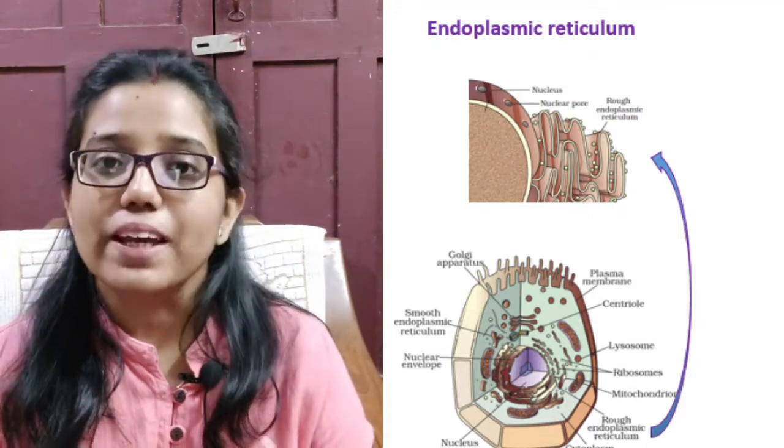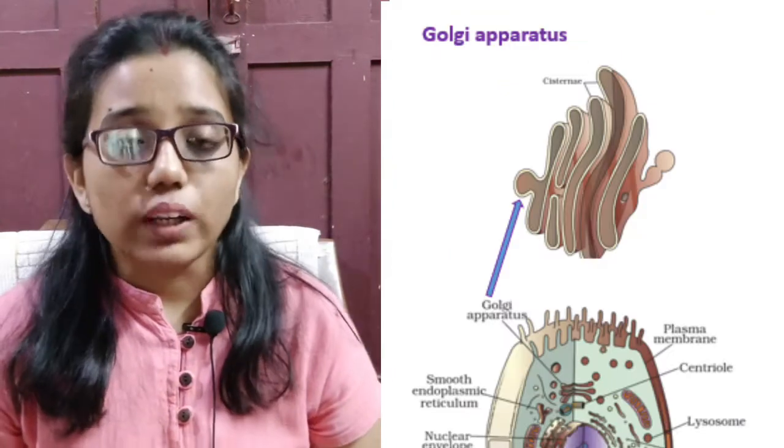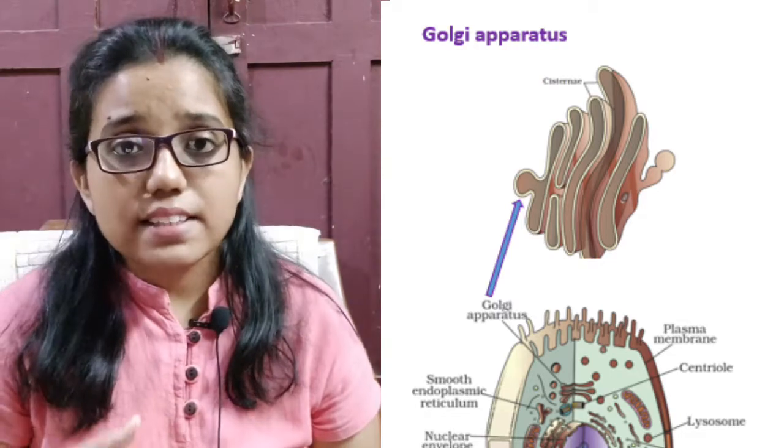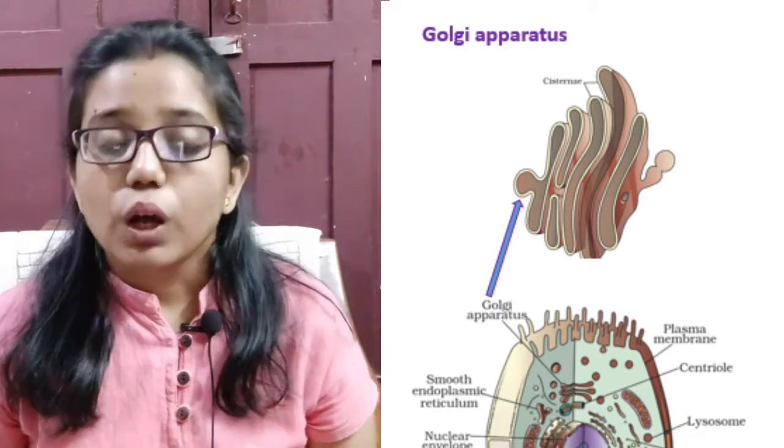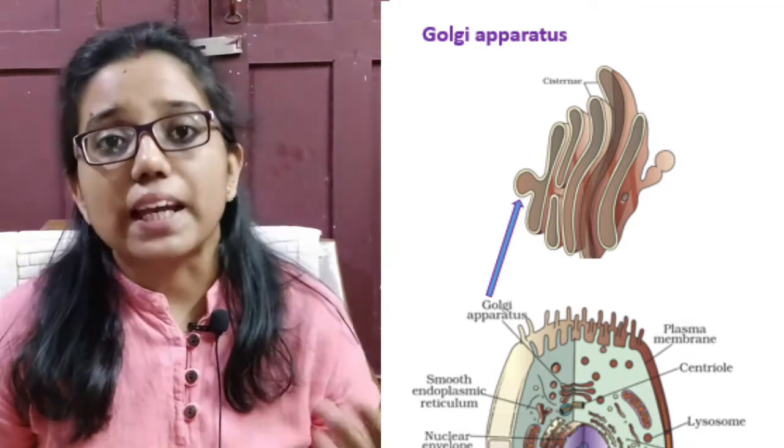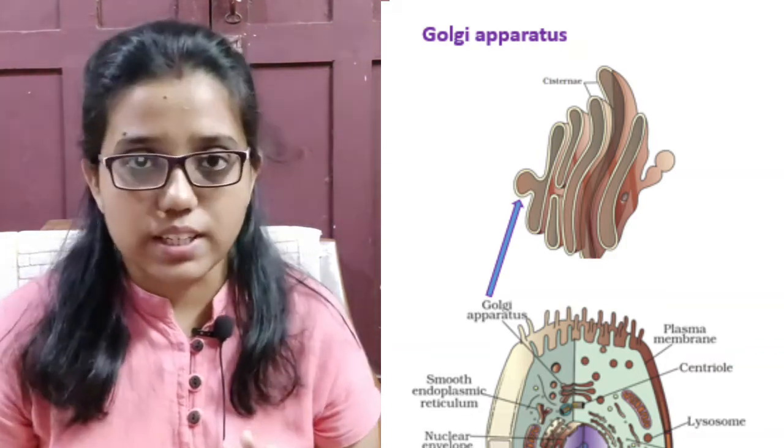And smooth endoplasmic reticulum helps in synthesis of fat molecules. Then, golgi apparatus consists of some membrane-bound vesicles that are arranged in stacks parallel to each other. And these are called cisterns. Golgi apparatus helps in storage, modification, packaging, and dispatching of various materials inside and outside the cell.